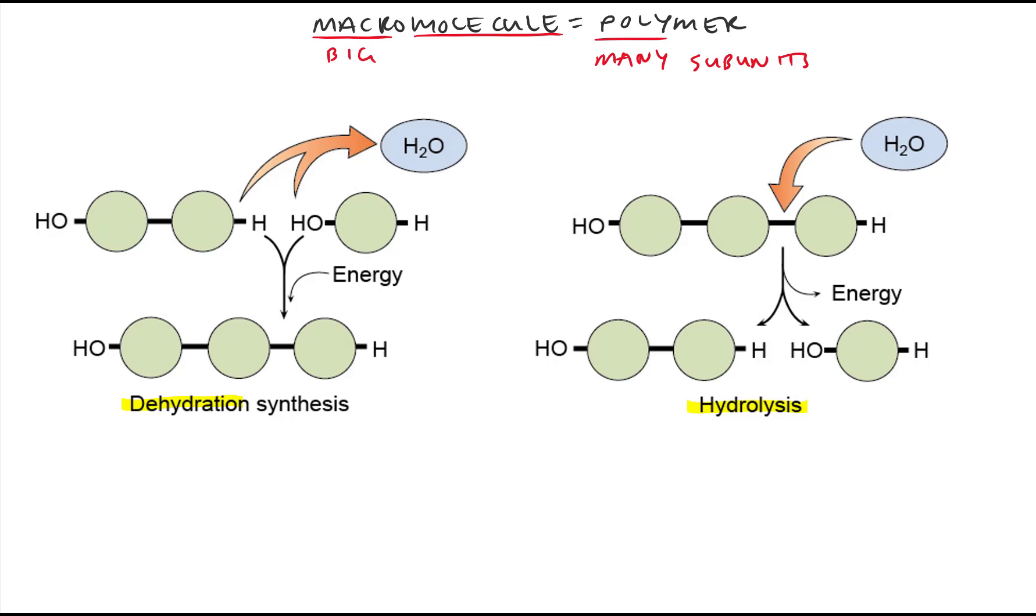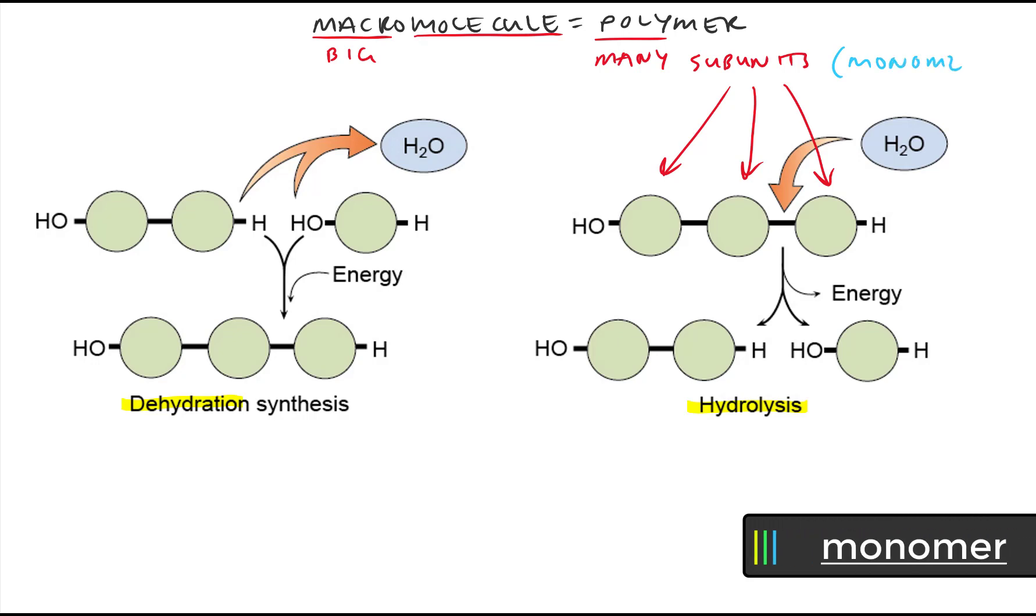Now the subunits themselves, like we see for example down here in this diagram, those subunits have a name too. And where the larger molecule they create is called a polymer, each individual subunit then is known as a monomer. And hopefully that should make some sense to you because if polymers are many subunits then a monomer is just one of those subunits. That's what mono means.